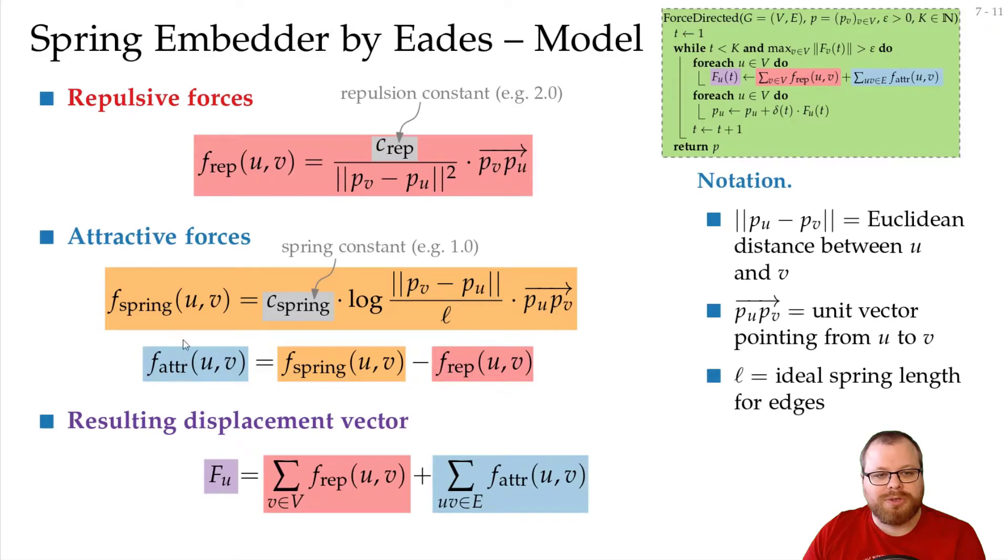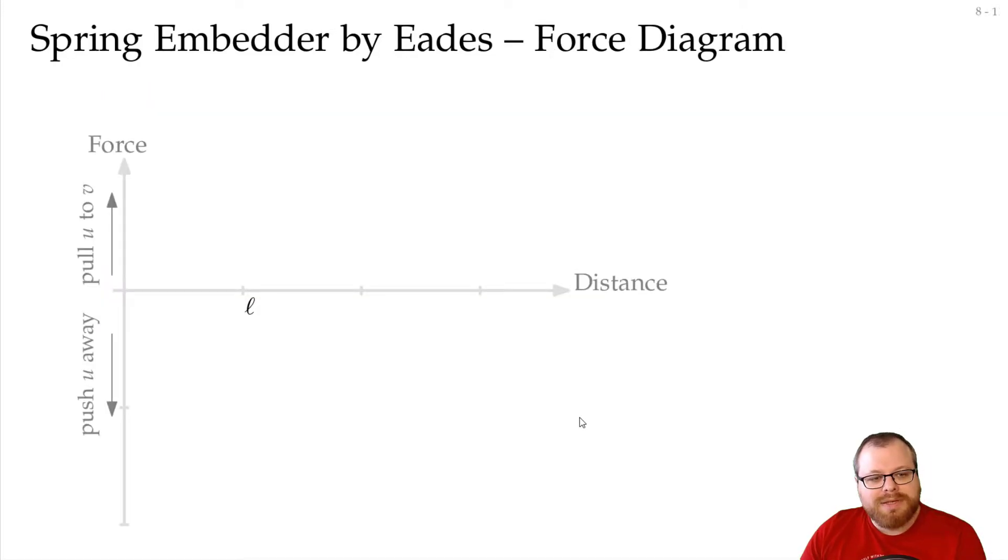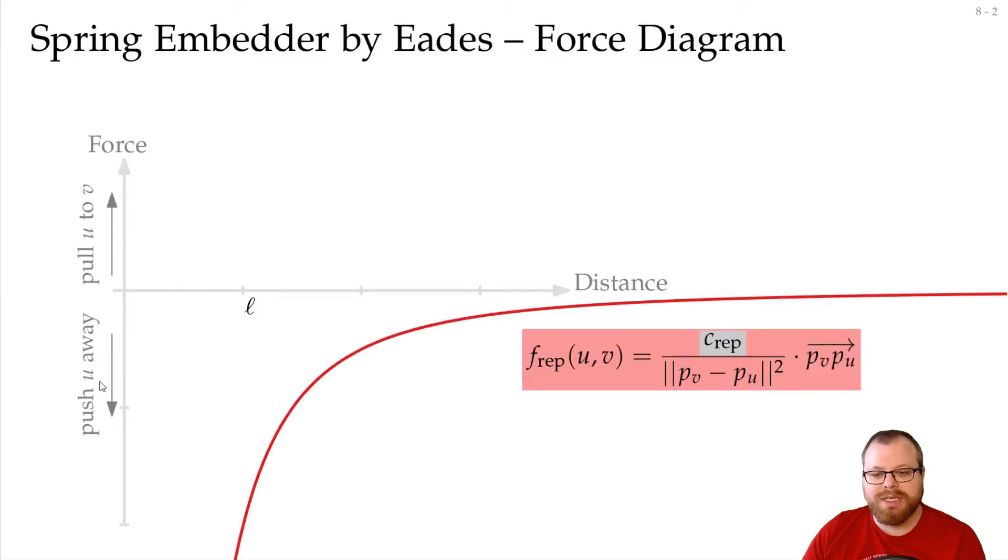So this gives us the two forces, the repulsive force and the attractive force between any pair of vertices. How does the force diagram look like? So if we just want to plot these functions, at the bottom we have that u gets pushed away, at the top we have that u gets pulled to v. The repulsive function looks like this. The further away the distance, the smaller the force that pushes u away is, and if it's very close, then we have a huge force.